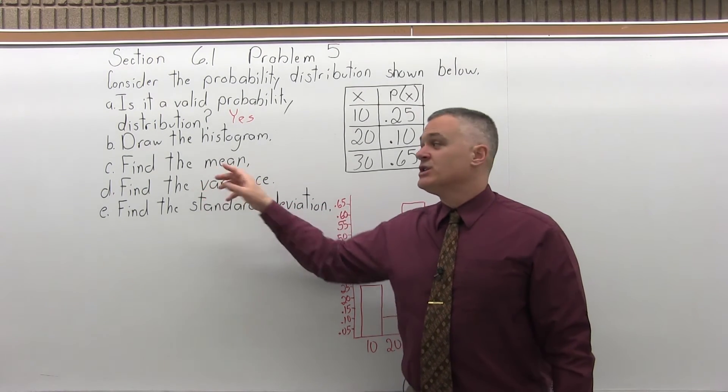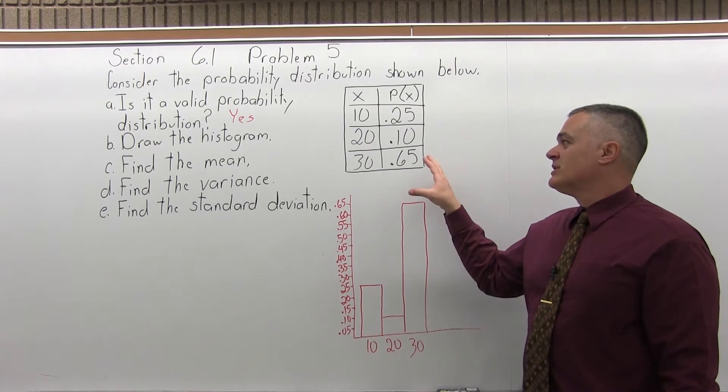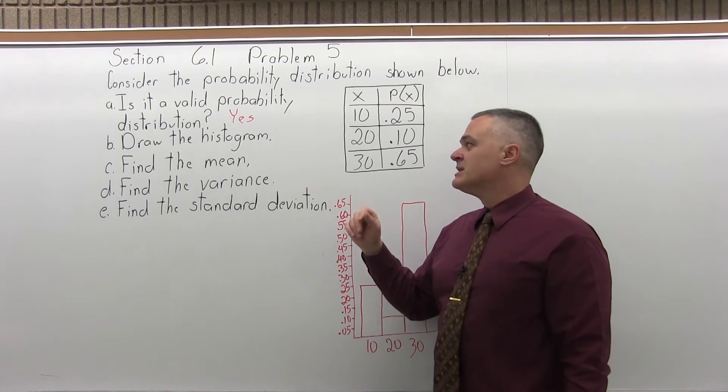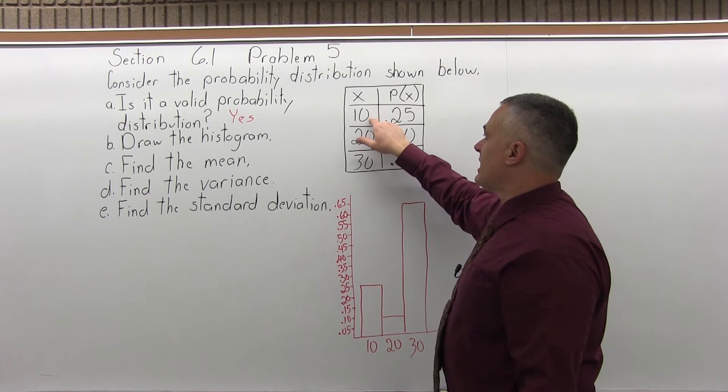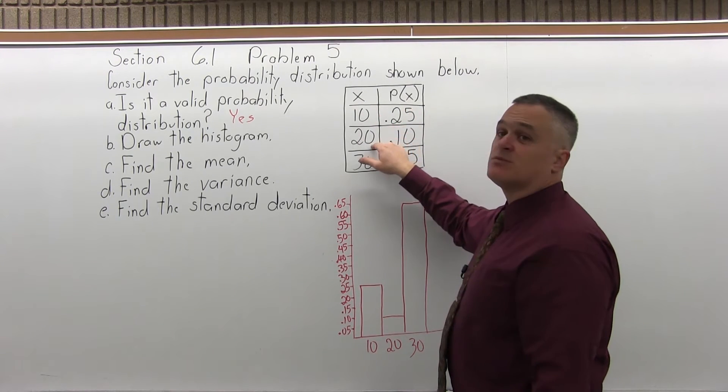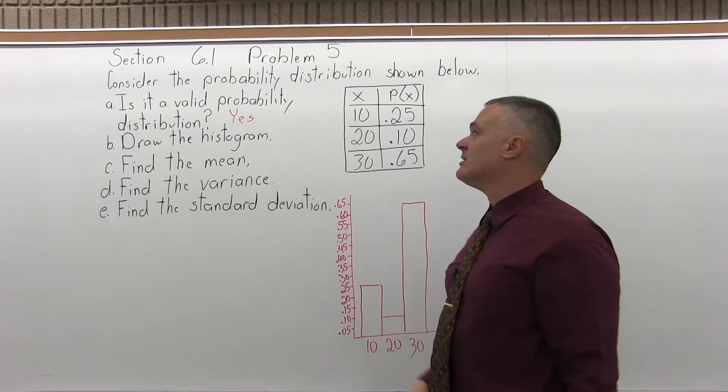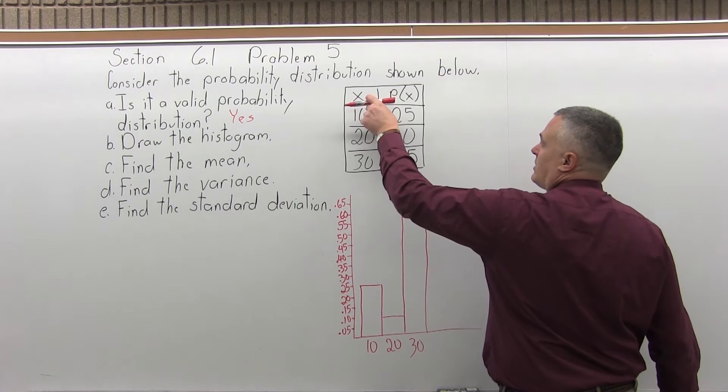Find the mean. So the mean is the average value, like if you conducted this experiment many, many times. And the way to find that mean is multiply every number in the first column times this probability, get the results, and add them together.